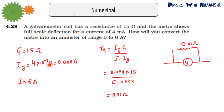How will you convert the meter into an ammeter of range 0 to 6 ampere? So I have to measure 6 ampere. So the value of shunt will be Ig into G divided by I minus Ig.